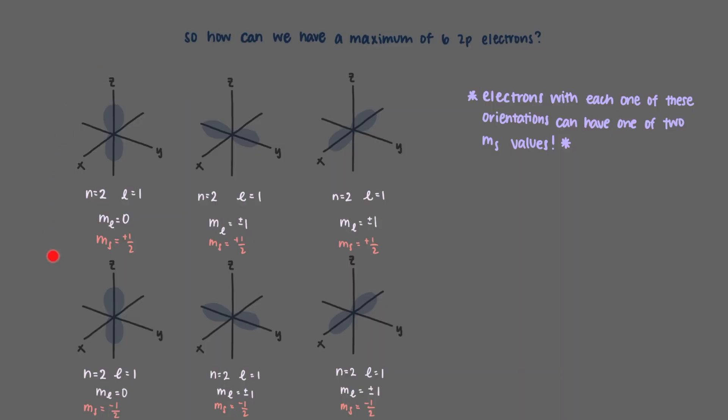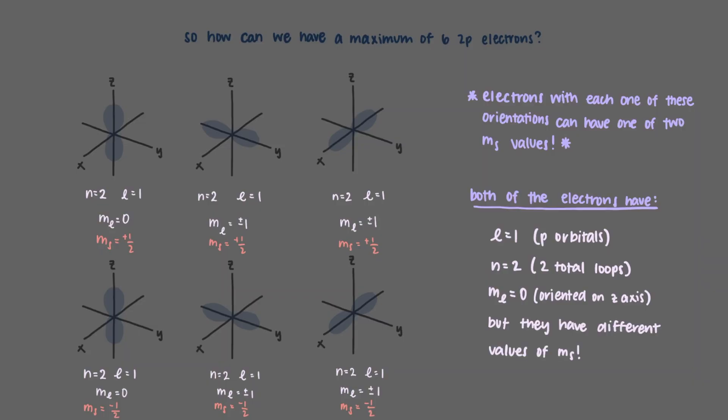Also notice that these two 2p electrons don't look any different. They're both l equals 1, so they're both p orbitals, n equals 2, which means they have two total loops, one radial and one nodal plane, and m sub l equals 0, which means they are oriented along the z axis. The only differences are their values of m sub s.